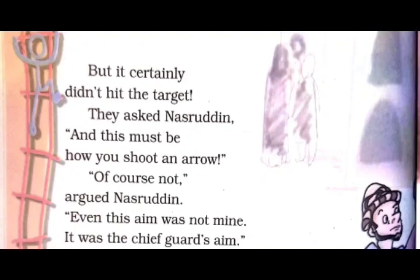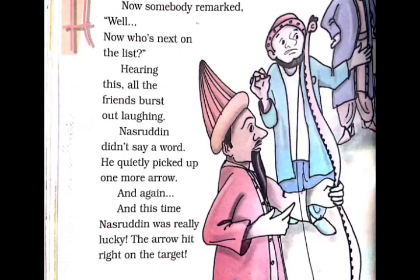His friends asked, 'Nasruddin, and this must be how you shoot an arrow?' — kya yahi tumhara tarika hai? 'Of course not,' argued Nasruddin — nahi, yeh mera aim nahi tha. 'Even this aim was not mine — it was the chief guard's aim. I was showing how the chief guard shoots an arrow.'